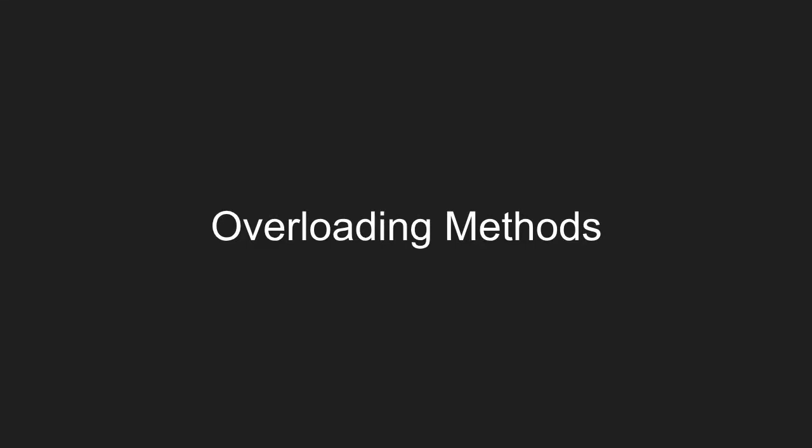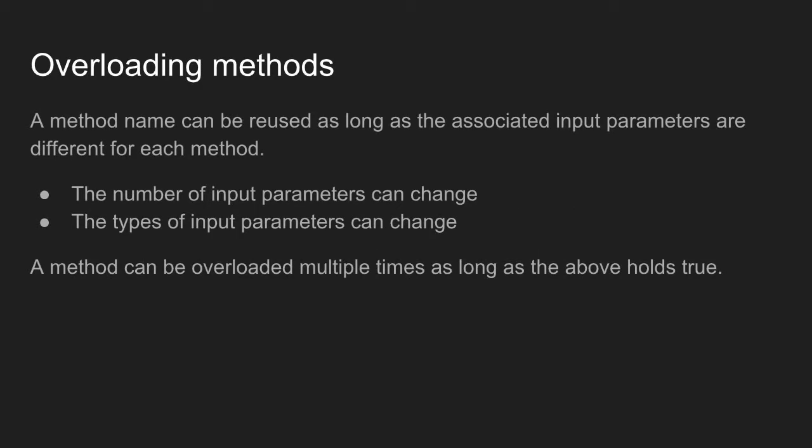In this video we will look at overloading methods in C#. A method is considered overloaded when the same method name is used more than once. A method name can be reused as long as the associated input parameters are different for each method. Two methods with the same name can have the same number of input parameters but different data types, or they can have different numbers of input parameters. A method can be overloaded as many times as required as long as these rules are followed.